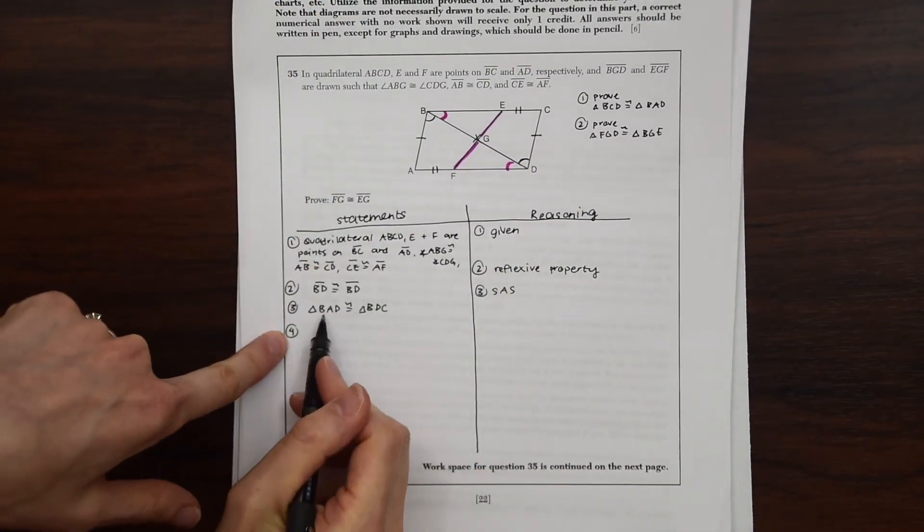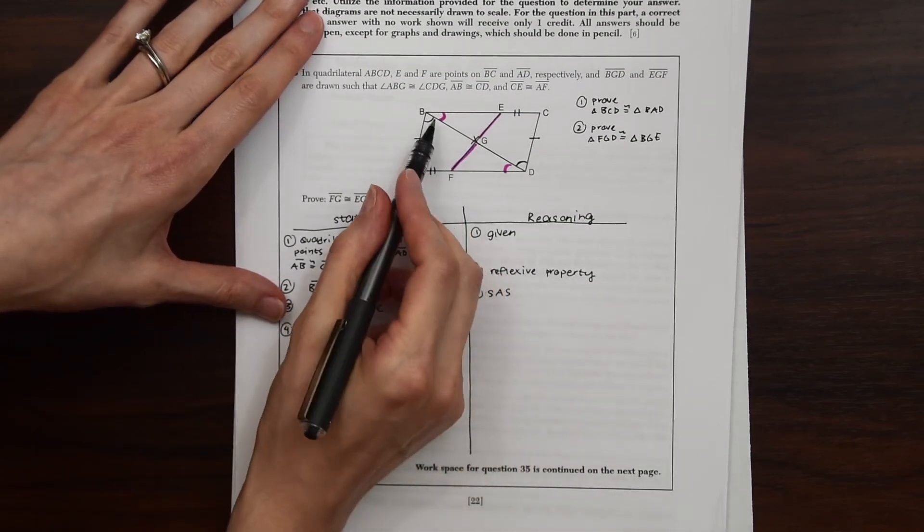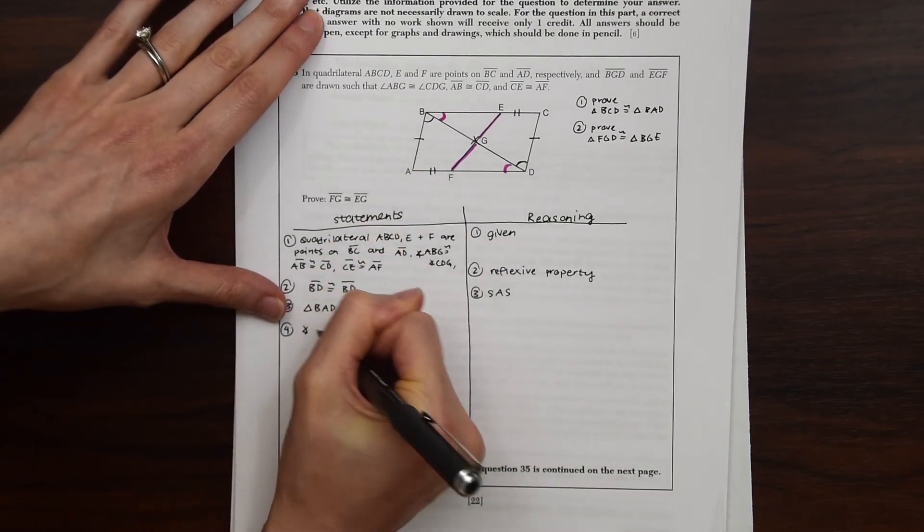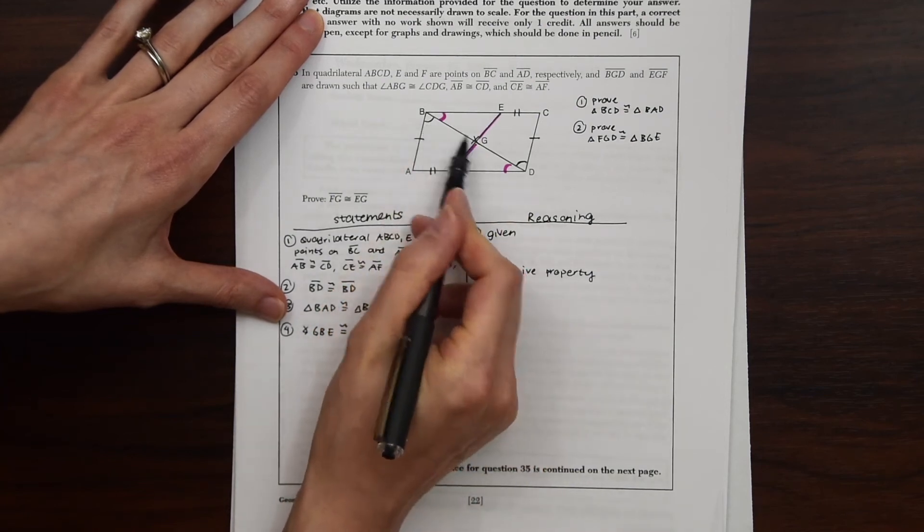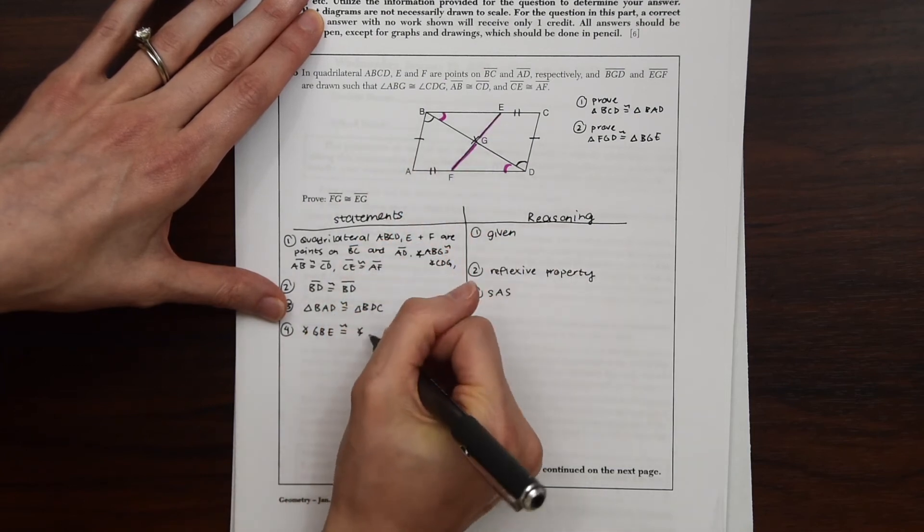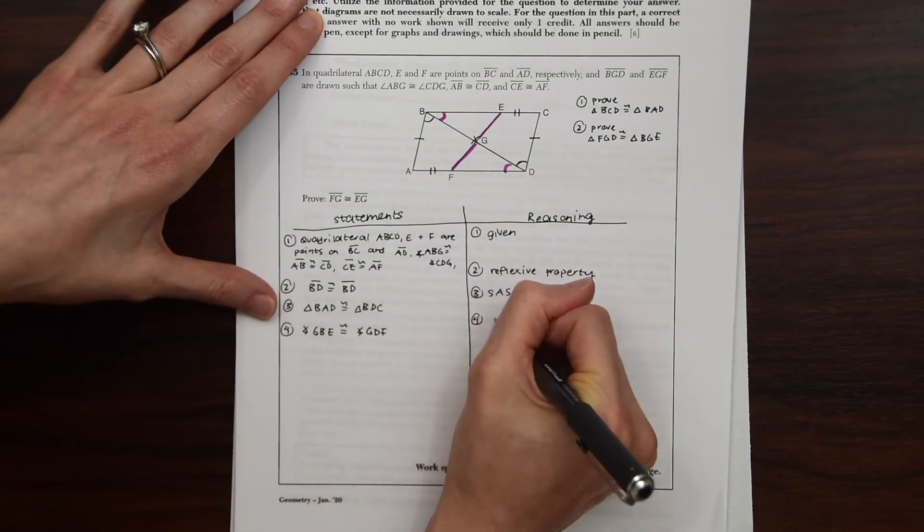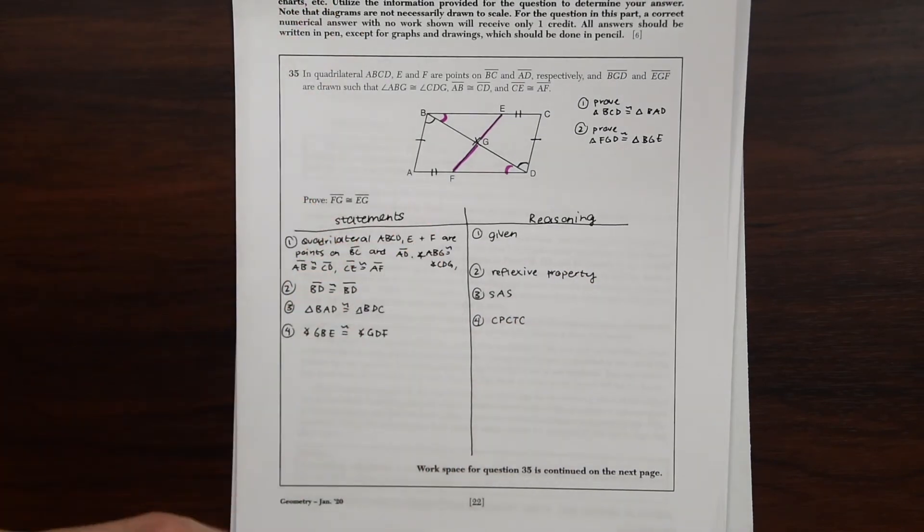So let's put that together. So we have angle GBE is congruent to angle GDF. Angle GDF. And this is based on CPCTC. Congruent parts of congruent triangles are congruent.